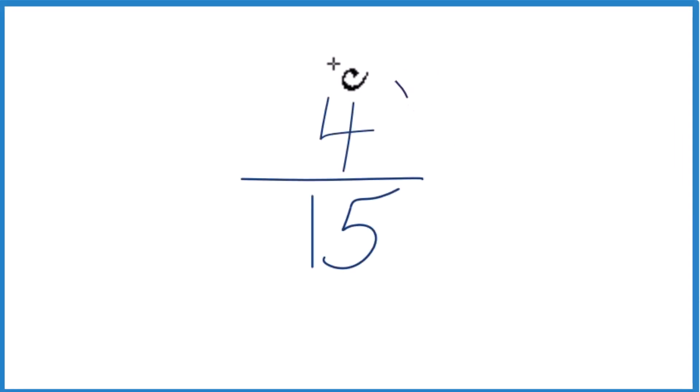Let's write the fraction 4 fifteenths as a decimal. So to start out, 4, that's smaller than 15. So when we divide 4 by 15, we should get a number less than 1, or a decimal. So let's do this.